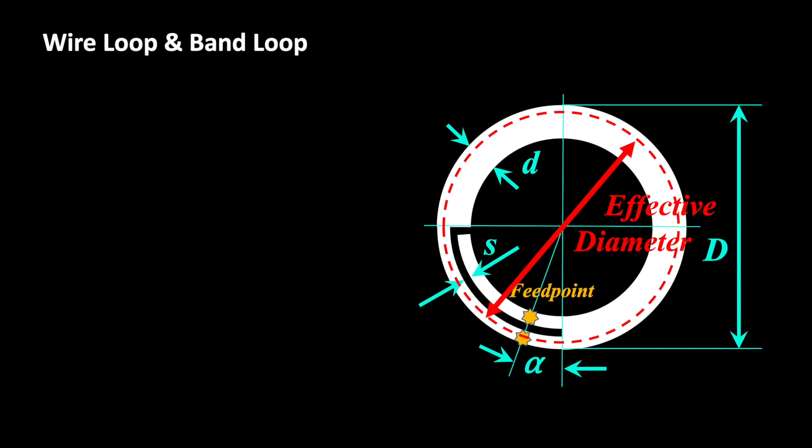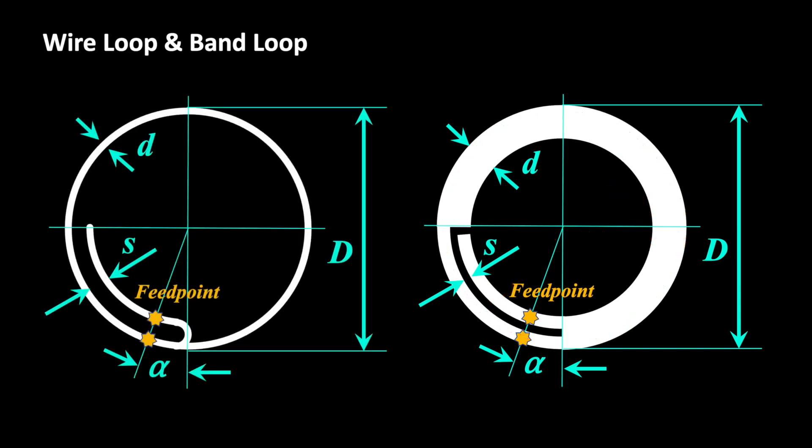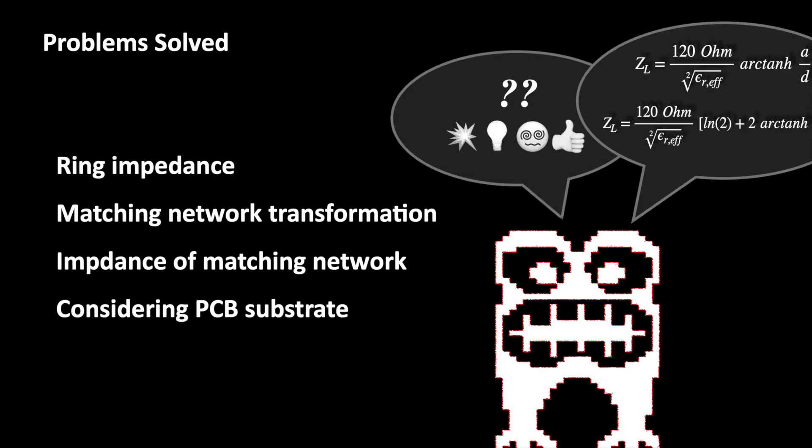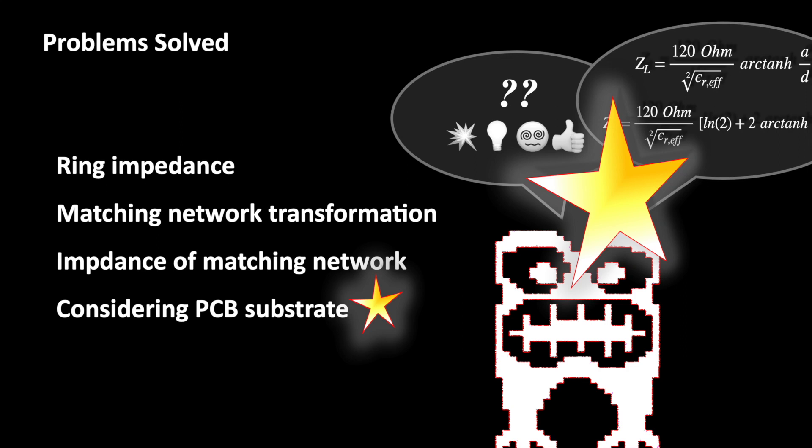I put these relationships into formulas and improve the calculations for the outer diameter of the wire antenna and the planar antenna accordingly. Now it gets difficult again, at least for me, because now comes the calculation of the PCB loop antenna.